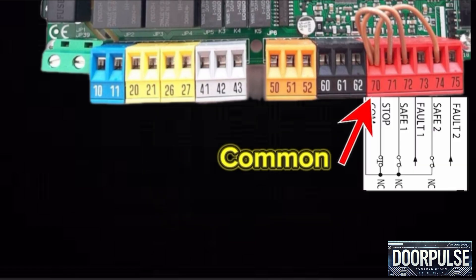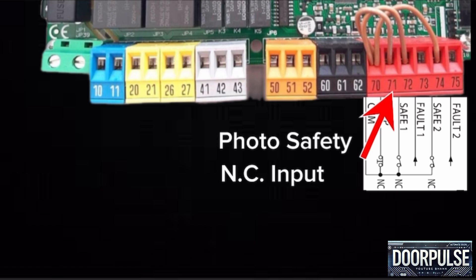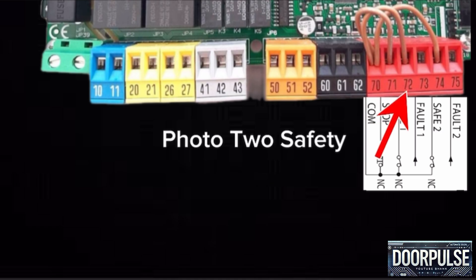JP8 block: a block for safety devices. Terminal 70 common for stop terminal, safety one terminal and safety two terminal. Terminal 71 is the command stops movement, it's NC contact. If not used leave jumper inserted. Terminal 72 is configurable safety input NC contact. By default photo sensor will connect here. If not used leave jumper inserted.